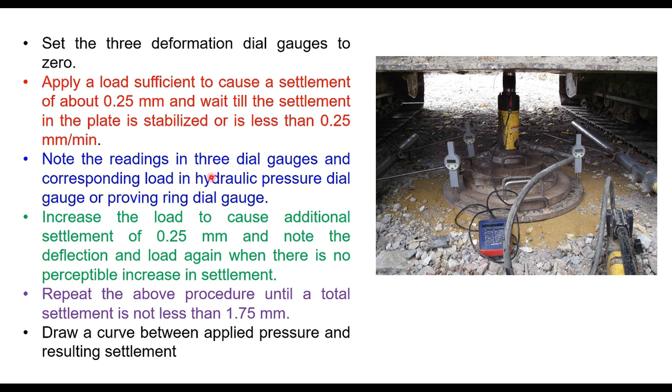Note the readings in three dial gauges and corresponding load in hydraulic pressure dial gauge or proving ring dial gauge. Increase the load to cause additional settlement of 0.25 millimeter and note the deflection and load when there is no perceptible increase in settlement. That means the reading of these three dial gauges have stabilized.